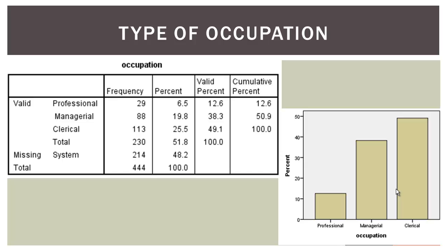Let's have a look at what this output is telling us about the distribution of occupation. Notice that there are a whole heap of missing values, because in this sample there are a lot of people who weren't actually employed, so type of occupation wasn't relevant for them. But of the 230 people that were employed, 49% were in clerical jobs, 38% in managerial jobs, and about 13% in professional jobs.